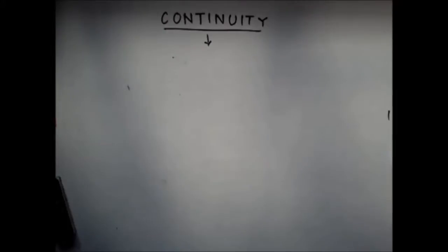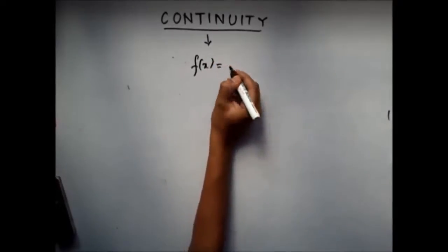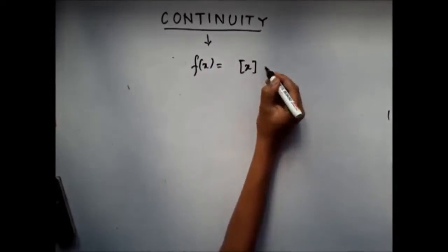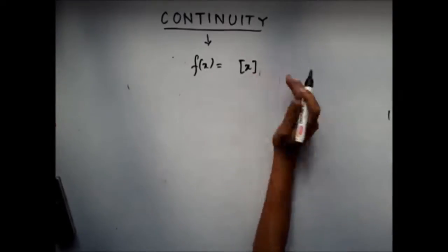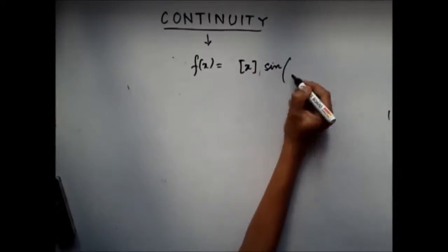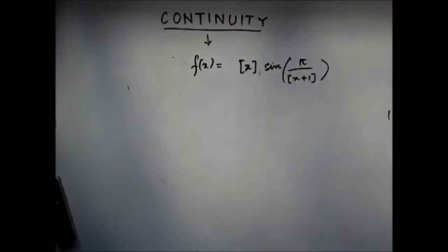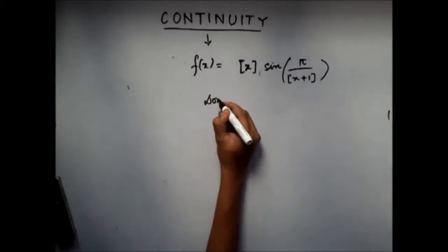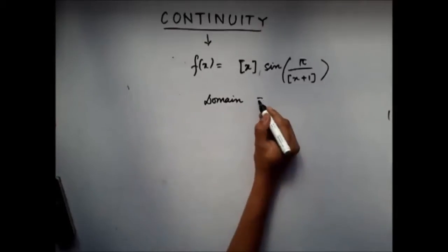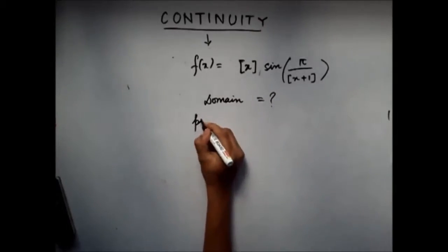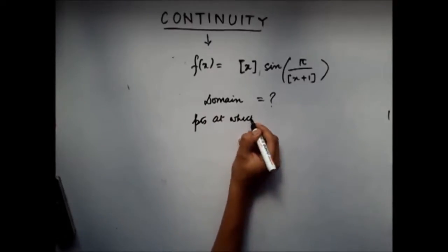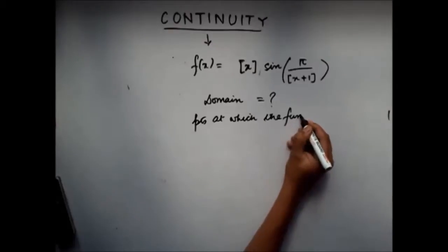The first example is that you have a function f(x) given by [x] multiplied by sin(x), where [x] denotes the greatest integer function. You are asked to find the domain of the function and the points at which the function is discontinuous in the domain.